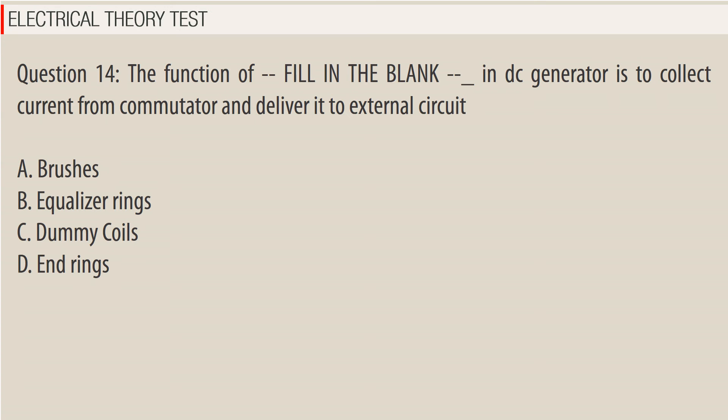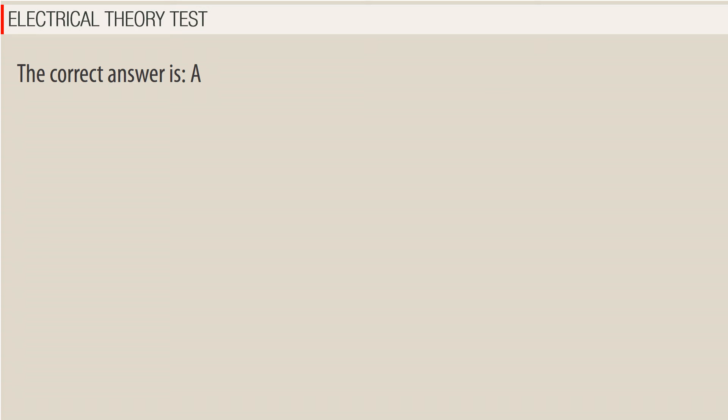Question 14: The function of — fill in the blank — in a DC generator is to collect current from the commutator and deliver it to the external circuit. A. Brushes, B. Equalizer rings, C. Dummy coils, D. End rings. The correct answer is A.